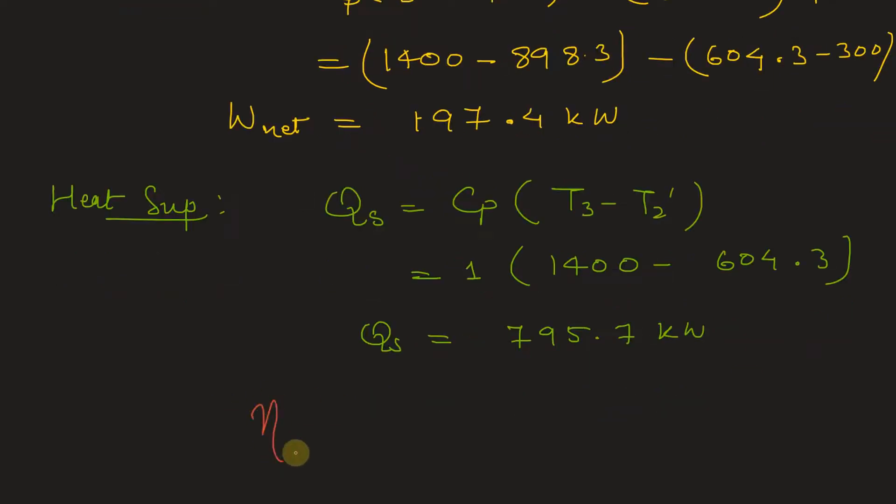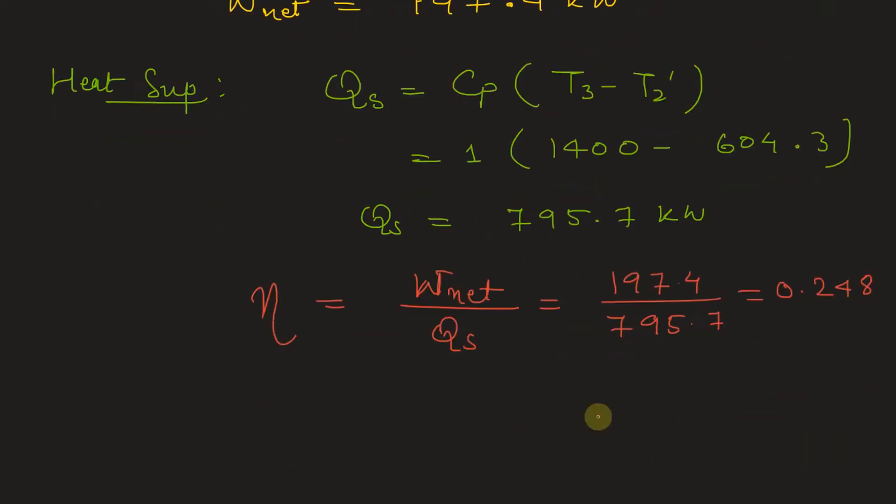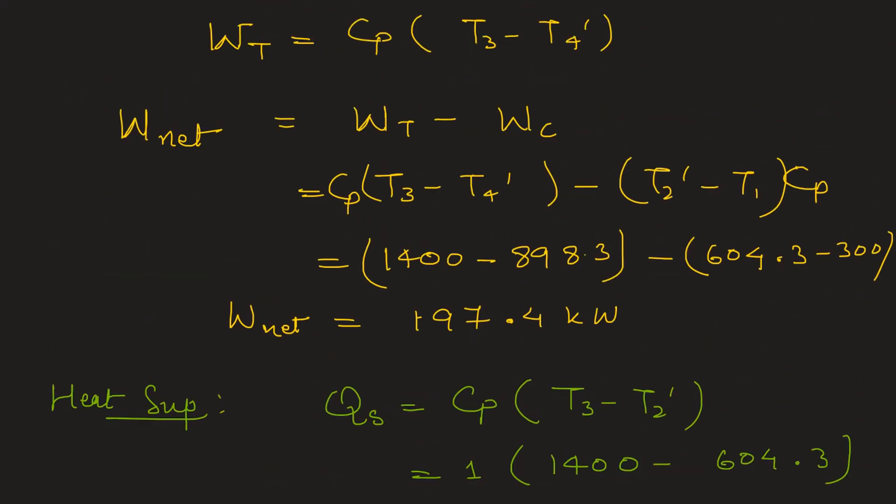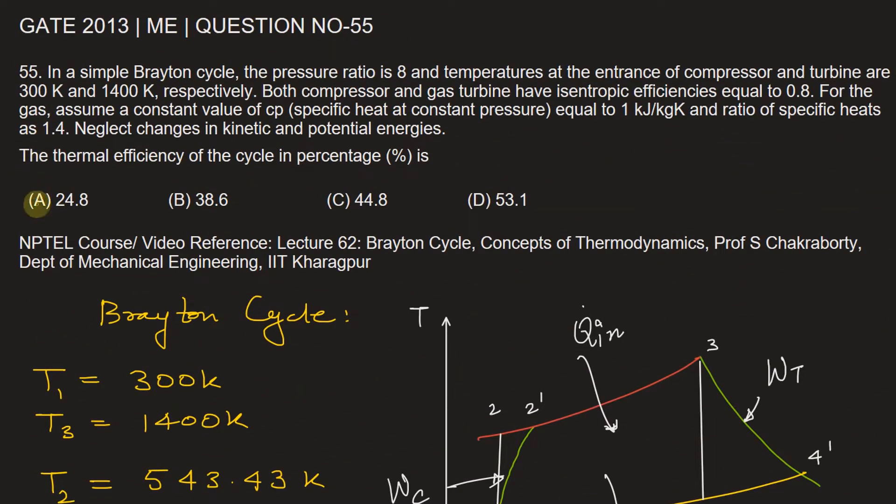Now we need to find the efficiency of the cycle. So efficiency of the cycle is net work done divided by the heat supplied, and net work done is 197.4 kilowatt divided by 795.7. So this will be equal to 0.248. So in percentage, we can write efficiency of the cycle is 24.8%. So let's go back and match with the given option. So option A is the correct choice.